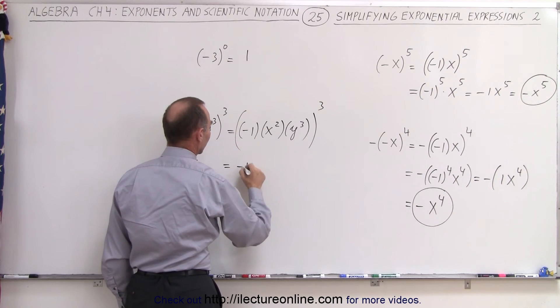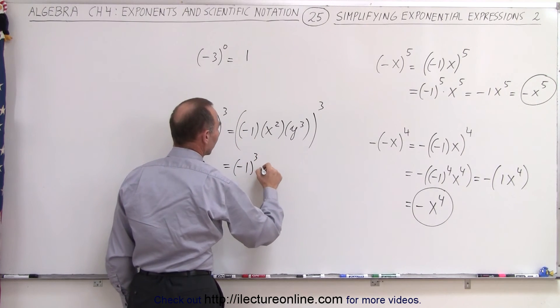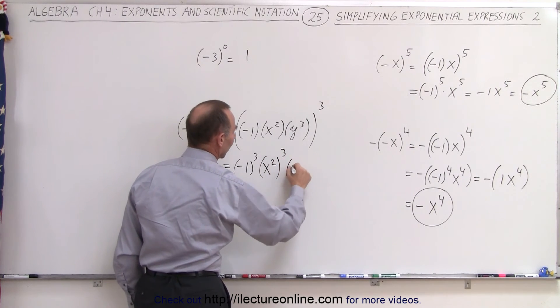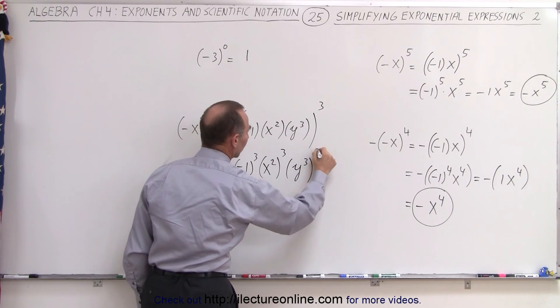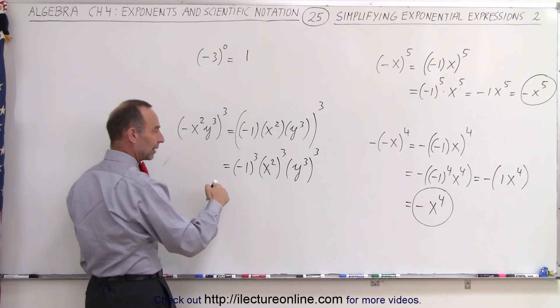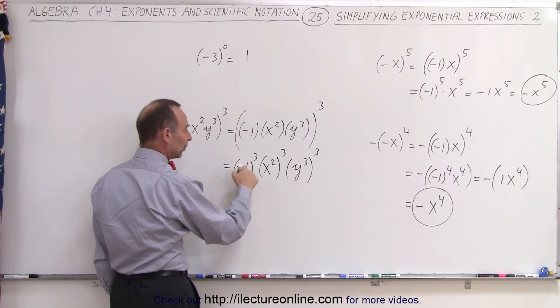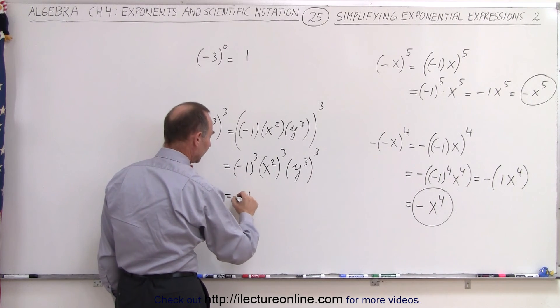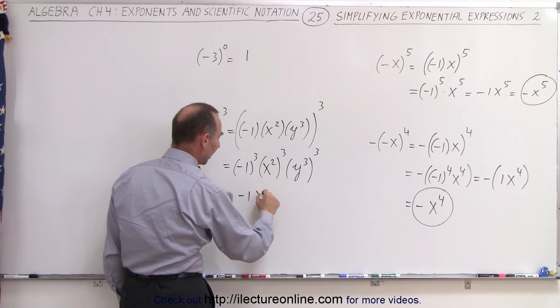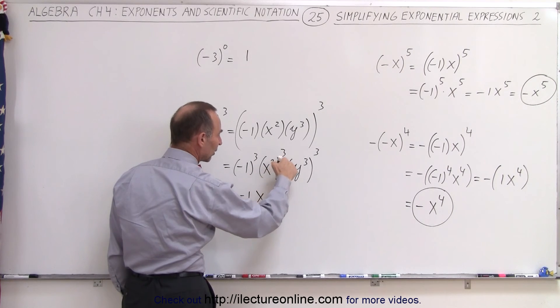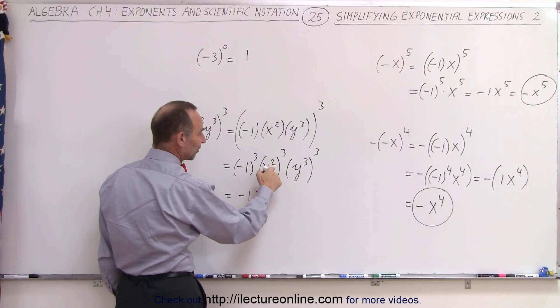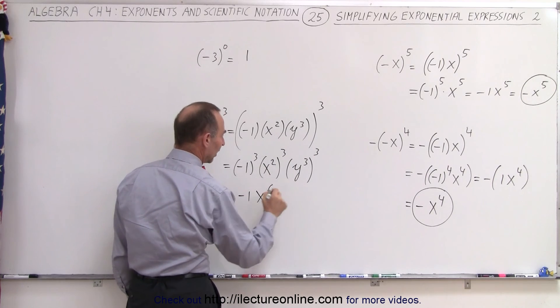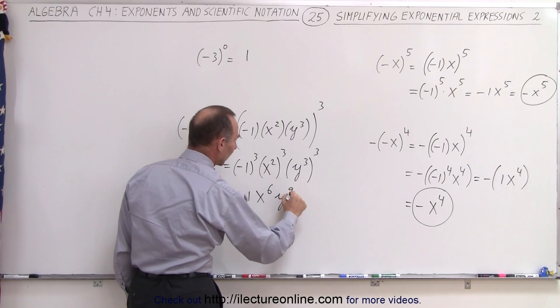So this is equal to negative 1 raised to the third power times x squared raised to the third power times y cubed raised to the third power. And then when we apply the exponent, negative 1 raised to an odd exponent always gives us negative 1. So this is negative 1 multiplied times x to the 2 times 3, because here we have to multiply. When we raise an exponent to another exponent, we multiply exponents, x to the sixth.